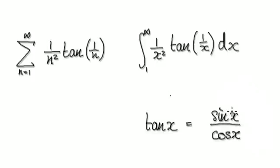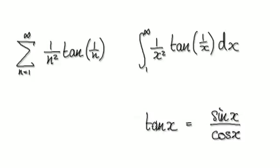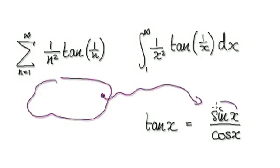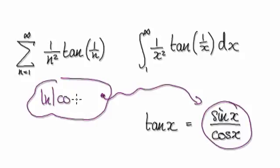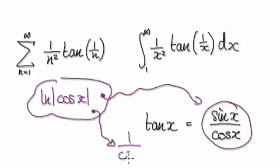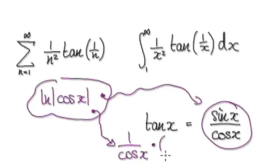If you're trying to integrate tan of x, remember tan of x is sine of x over cos of x. So if you're trying to integrate tan of x, you are really looking for something such that when you differentiate it, it will give you this. So if you make this to be your initial guess — absolute cos of x — and if you try to differentiate this, it will give you 1 over cos of x. But then you've got to account for the derivative of the bubble itself, which will be minus sine of x.